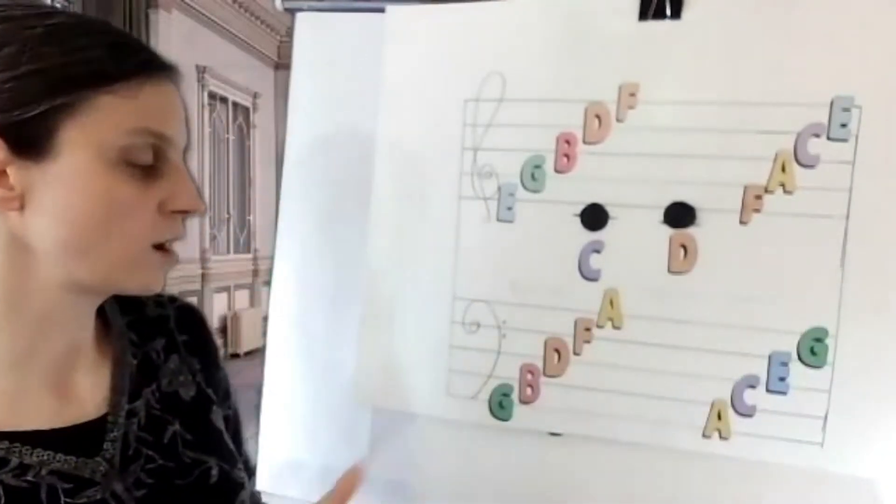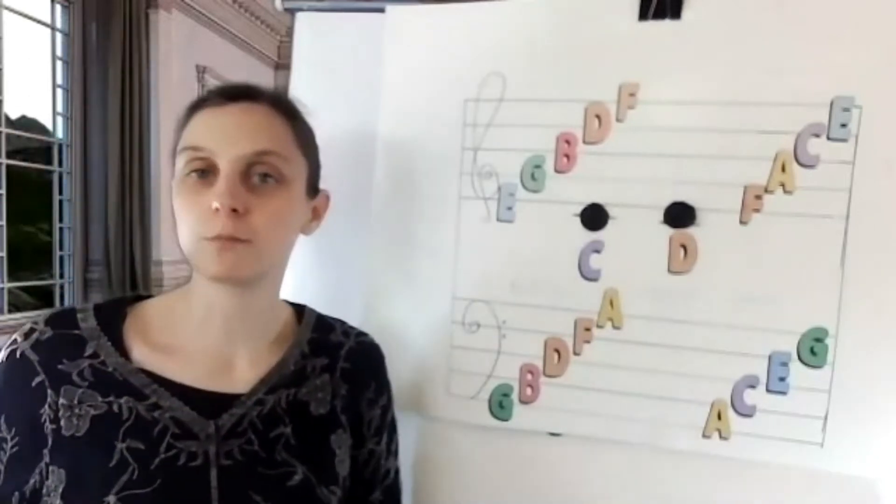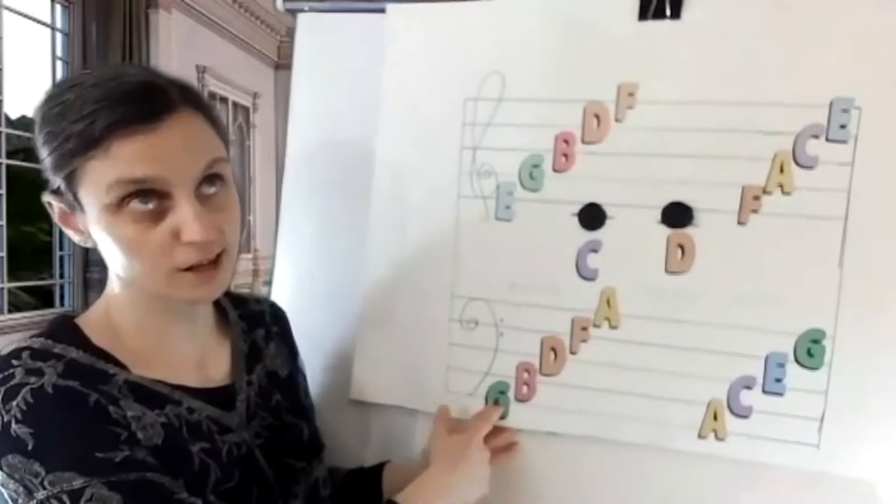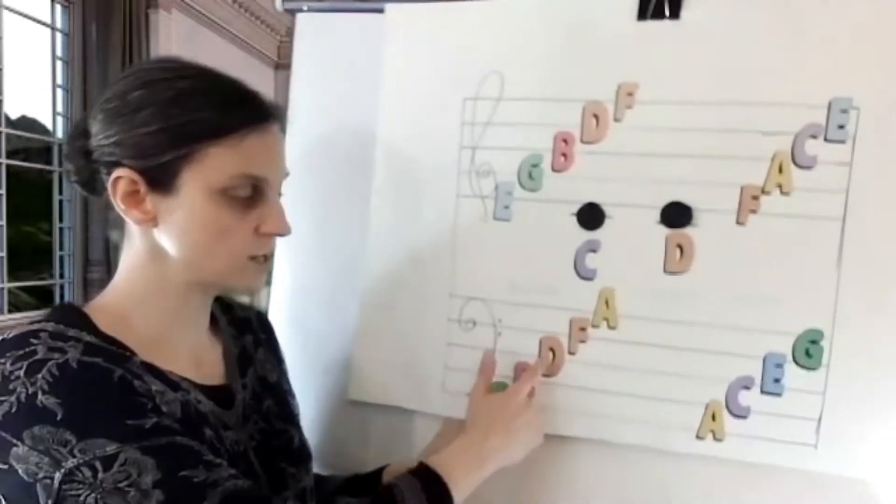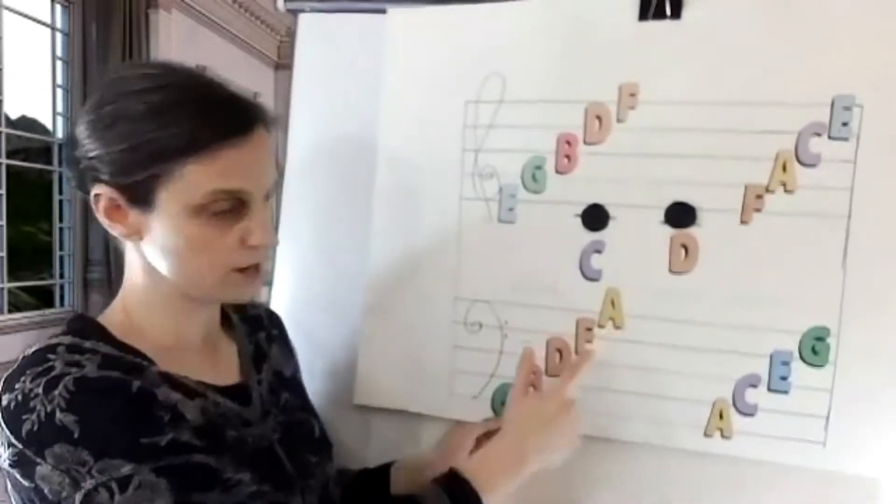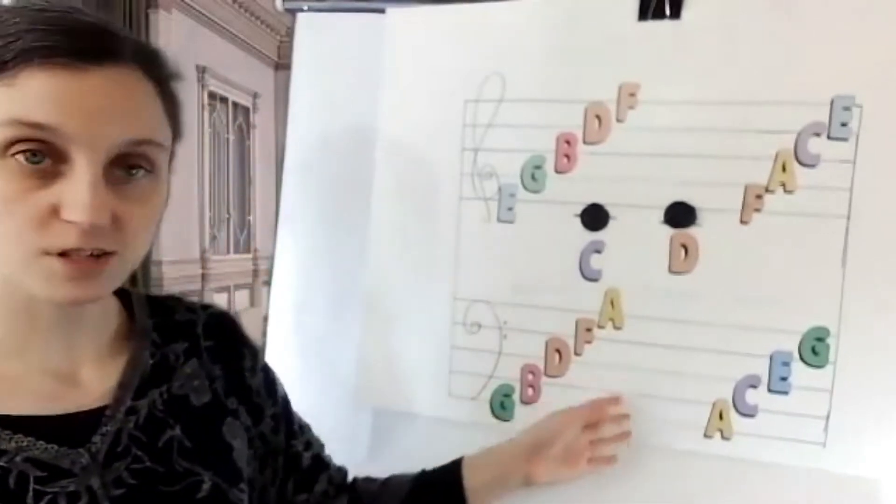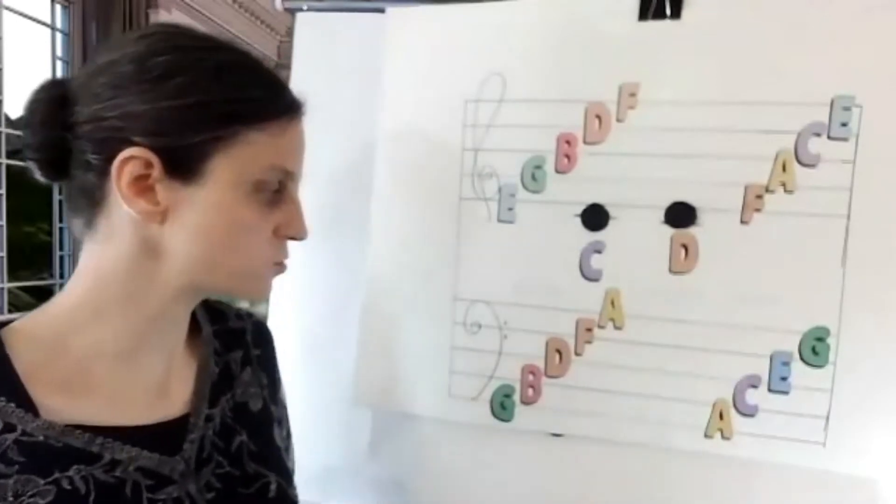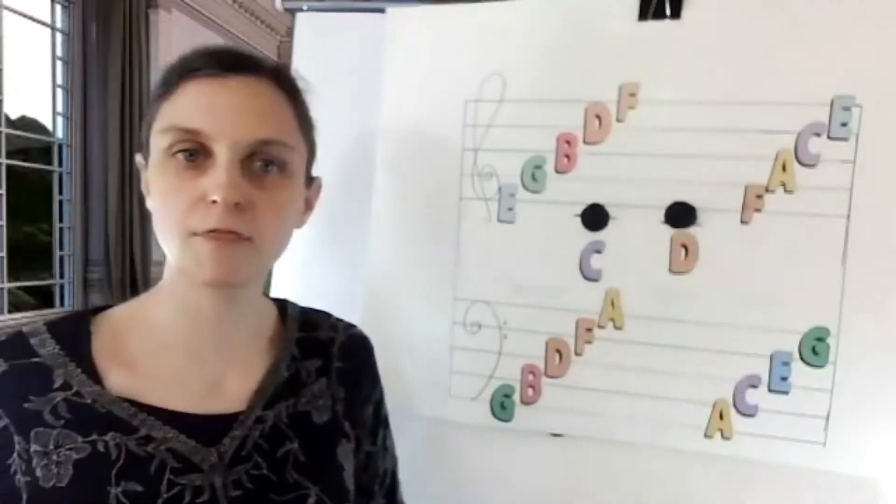So one of the old methods to remembering the lines and spaces is GBDFA, which is good boys do fine always. And then for the spaces, you've got all cows eat grass. So those were the two ways to remember that.